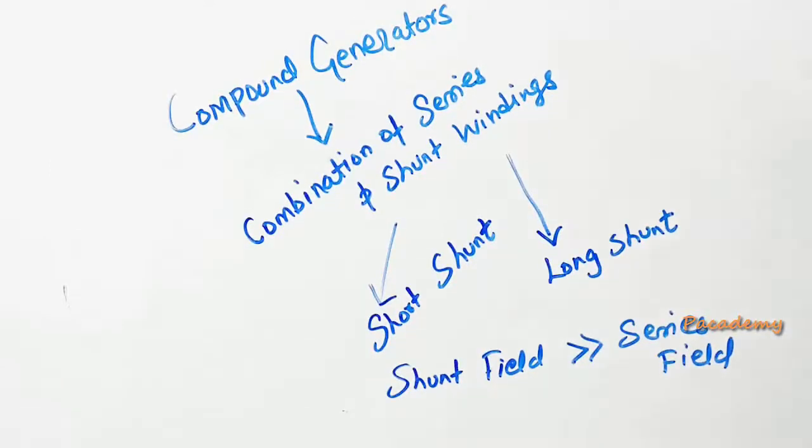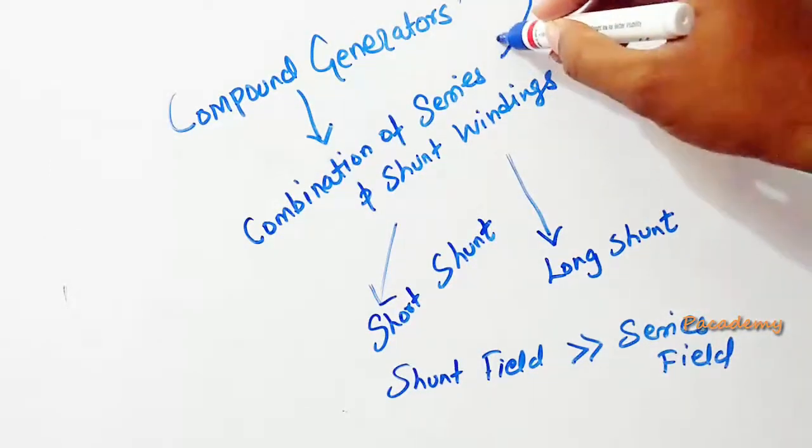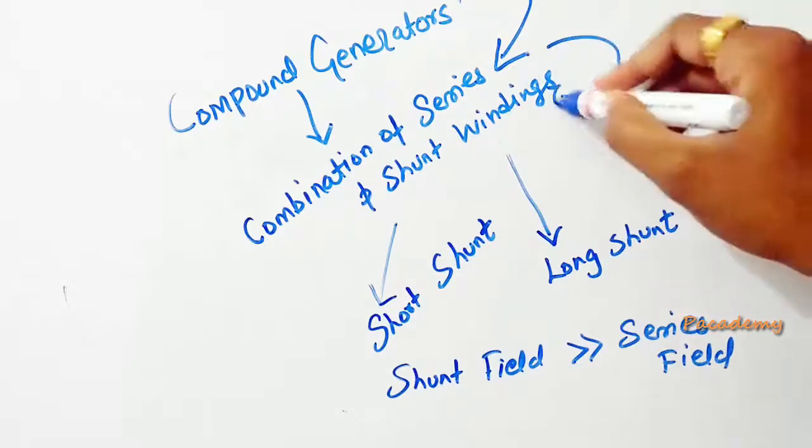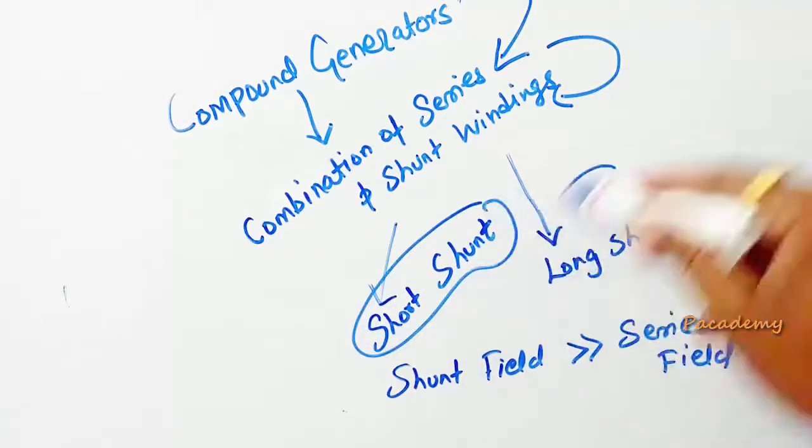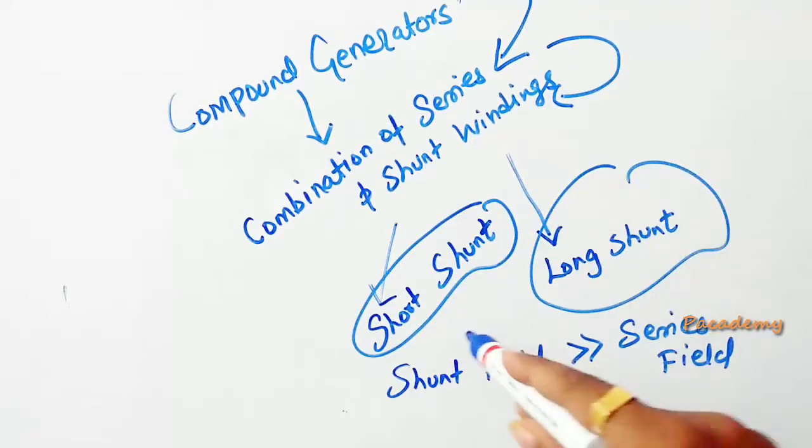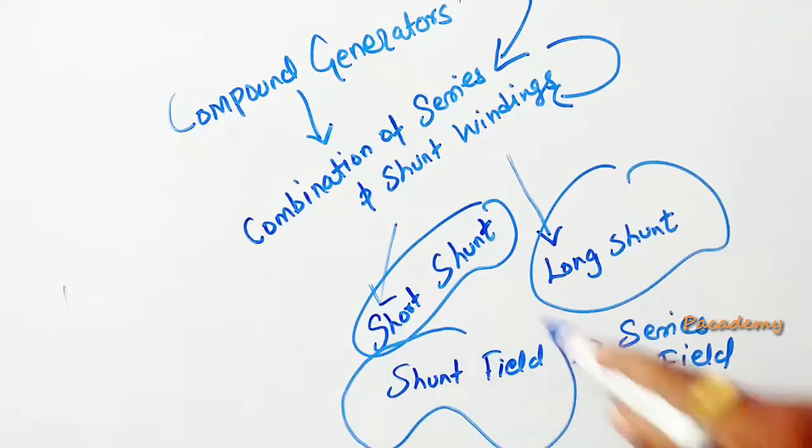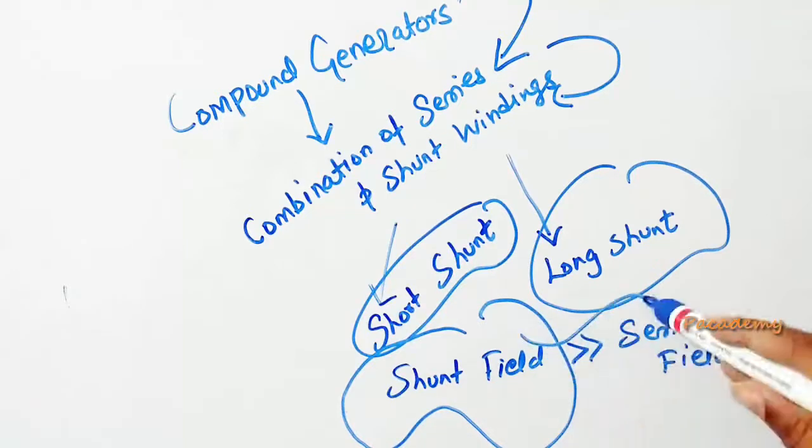Compound generators use a combination of both series and shunt windings. This kind of generator can be either short shunt or long shunt. In a compound generator, the shunt field will always be stronger than the series field.